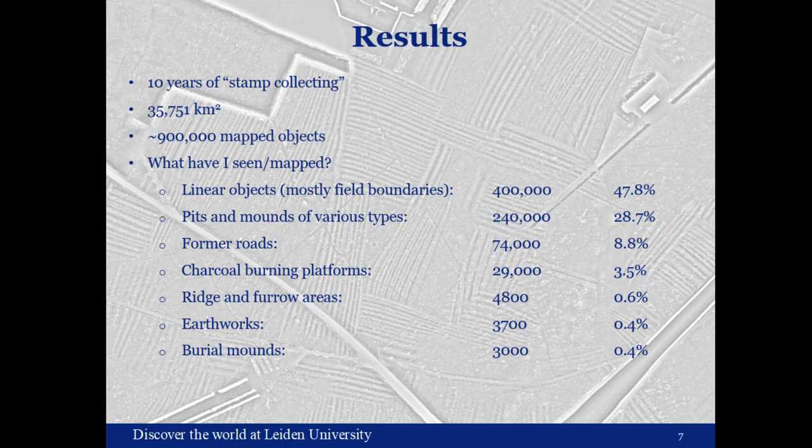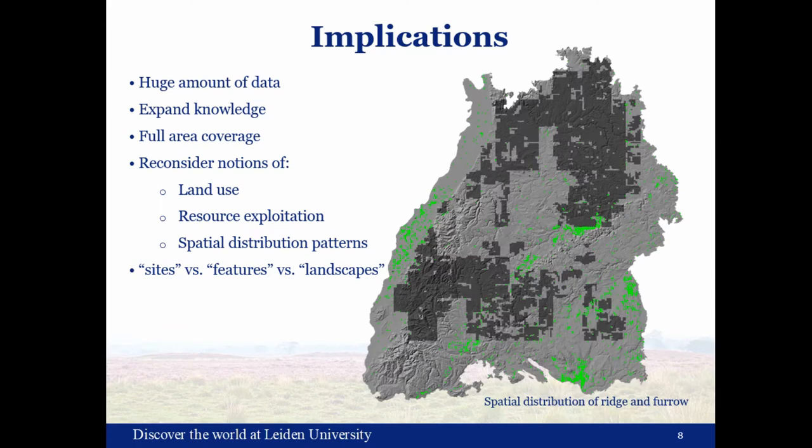What's coming out of these 10 years of mapping is approaching 1 million mapped archaeological objects, most of which relate to resource exploitation and land use — field boundaries, ridge and furrow, things like that. There are almost 30,000 charcoal burning platforms, and we'll come back to these in a minute. Producing that amount of archaeological data greatly expands our knowledge of the archaeology and underpins the shift of perception from discrete sites towards archaeological features embedded within archaeological landscapes.